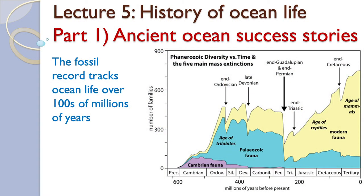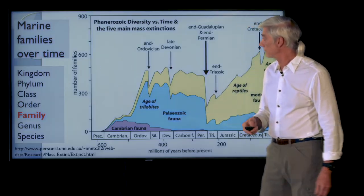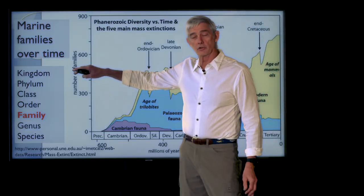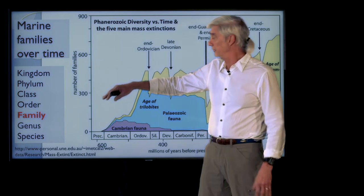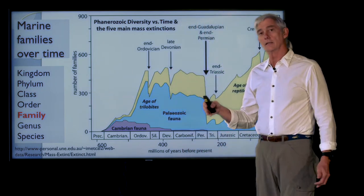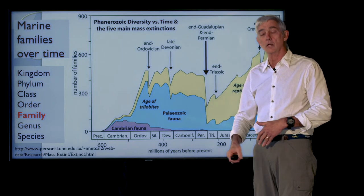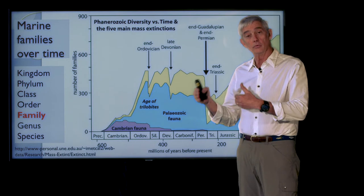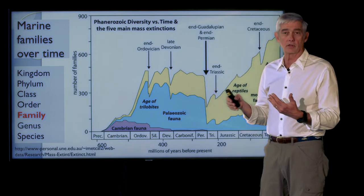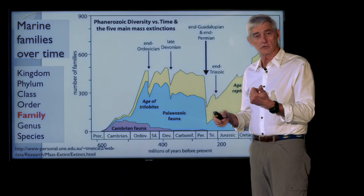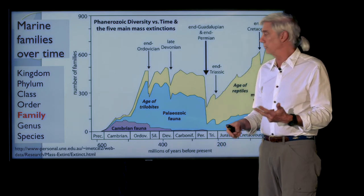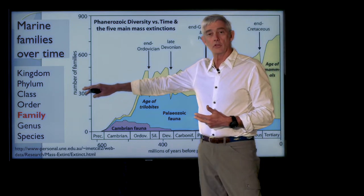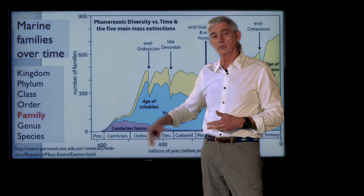What it's graphing is the number of families in the ocean over time. The family is a taxonomic unit. For example, the kingdom is the largest unit in the animals. Below that there are many different phyla. Echinoderms, for example, are a phylum of animals in the kingdom Animalia. That phylum is made up of a number of different classes, including sea urchins, sea stars, and sea cucumbers. Below that is the level of orders and below that is families.